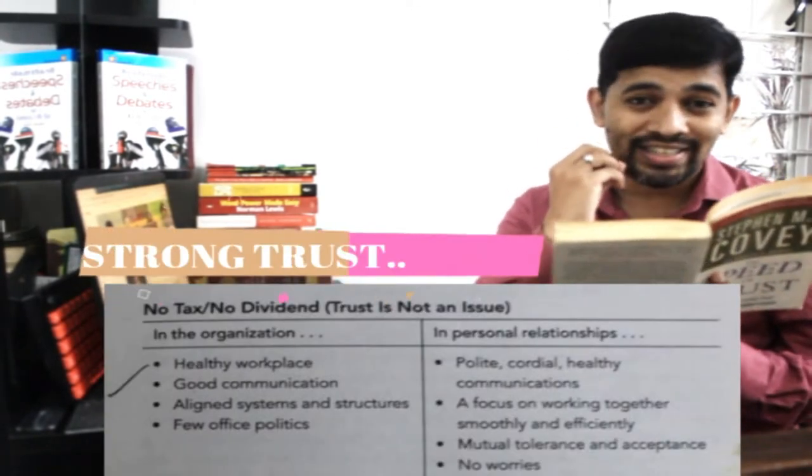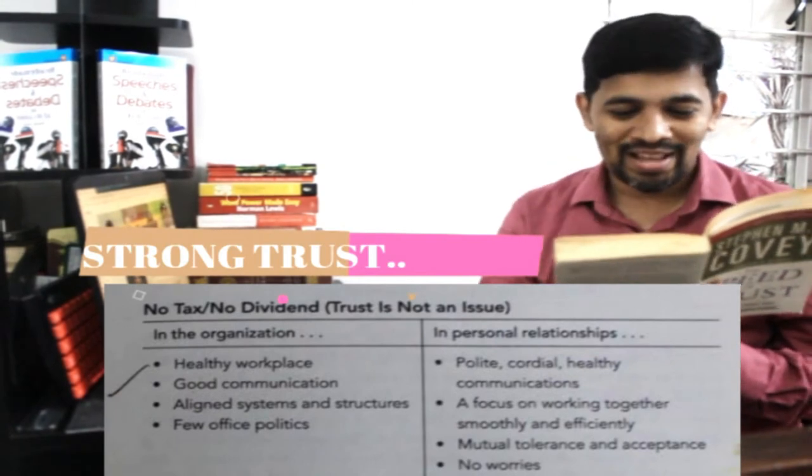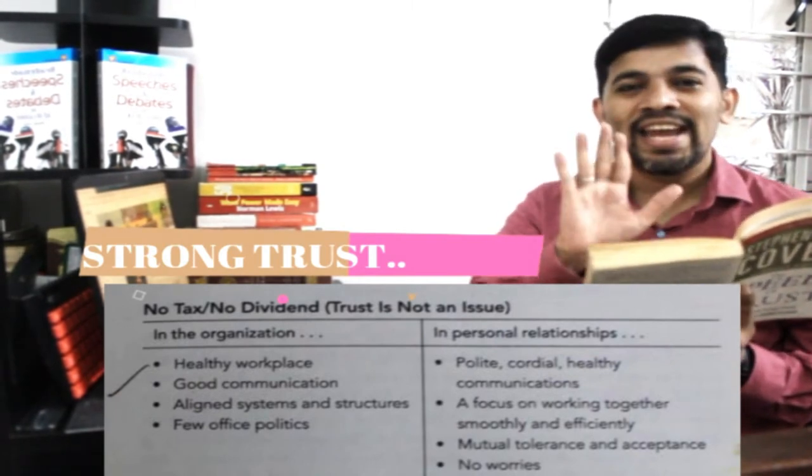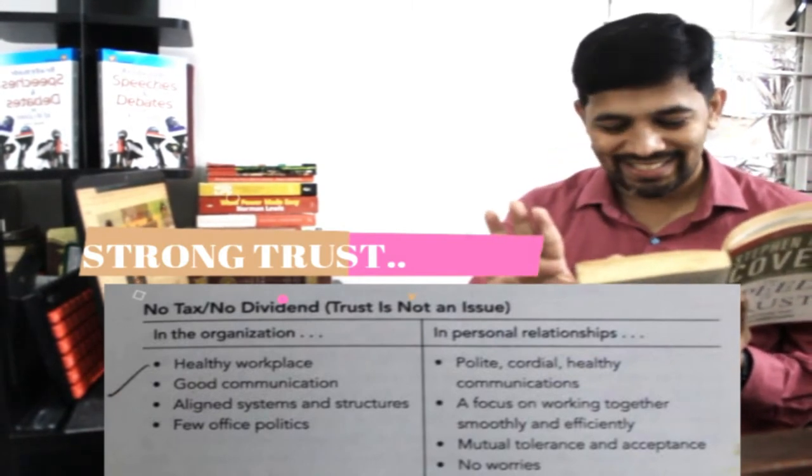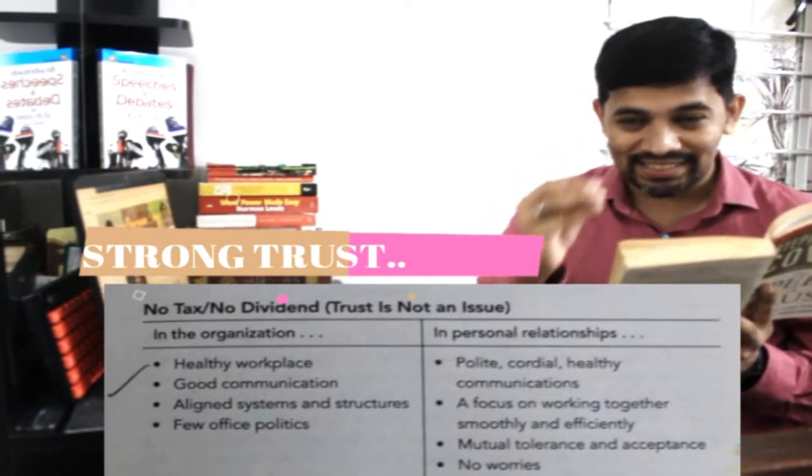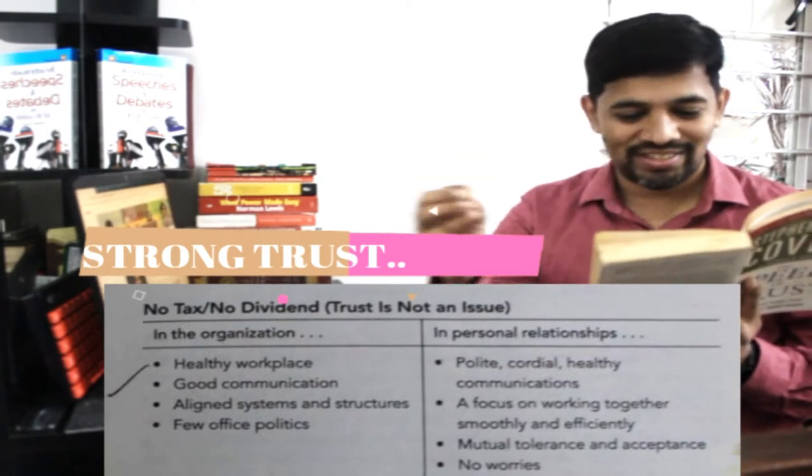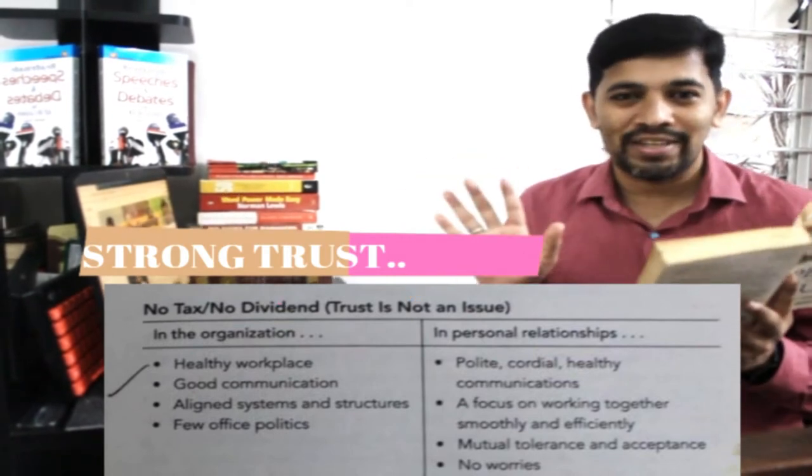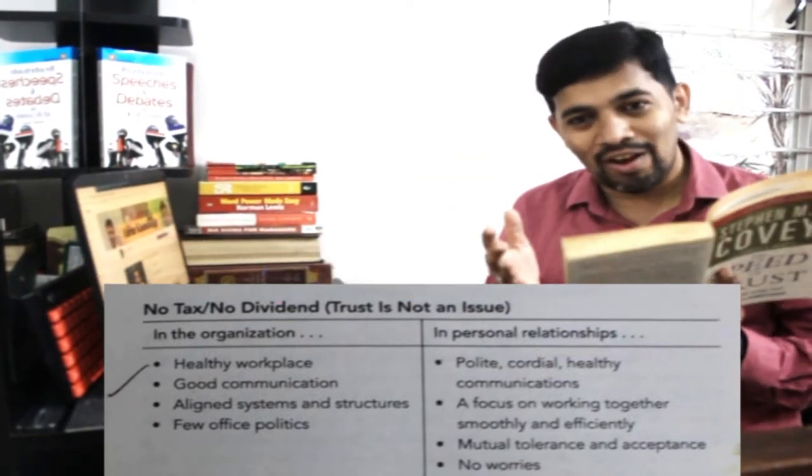So let's say we have strong trust, what will happen? In an organization, healthy workplace will take place. Number two, good communication will take place. Number three, aligned systems and structures. Few office politics - you can avoid, get rid of the office politics.